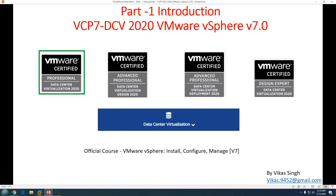Hi friends, welcome to my channel. This is Part 1, the introduction video of VCP7 DCV, which is Data Center Virtualization 2020. The official course name is VMware vSphere Install, Configure, Manage version 7. In this course we are going to use ESXi version 7 and vCenter Server Appliance version 7 — everything is part of the VMware vSphere version 7 solution.